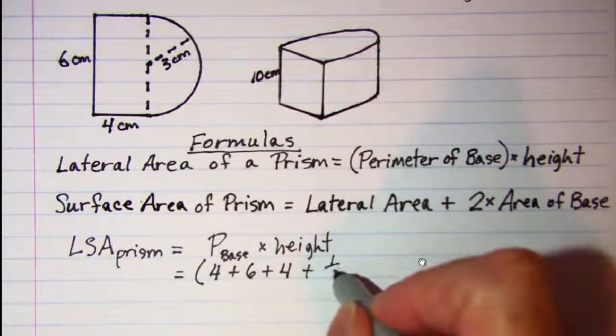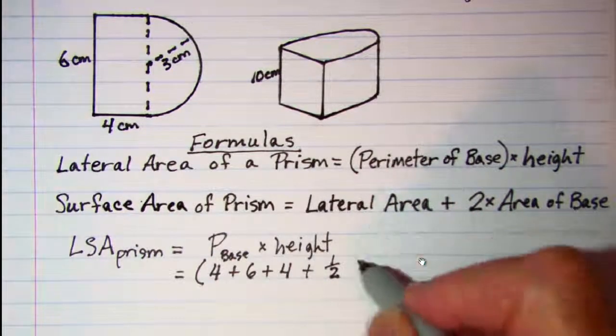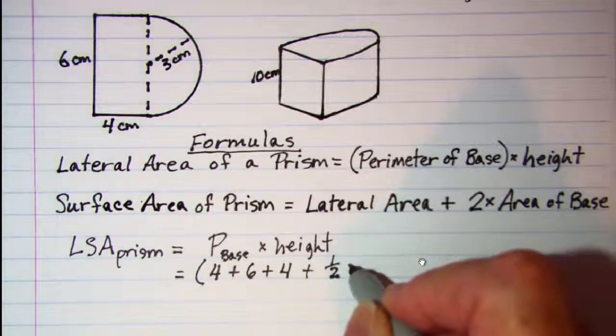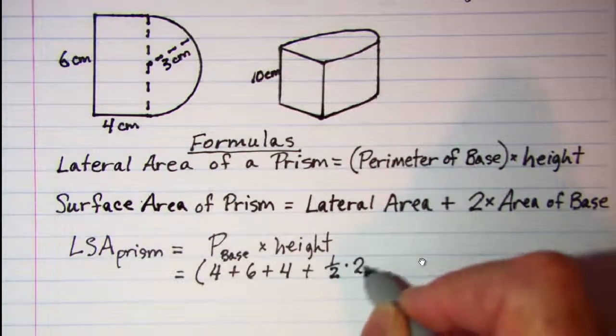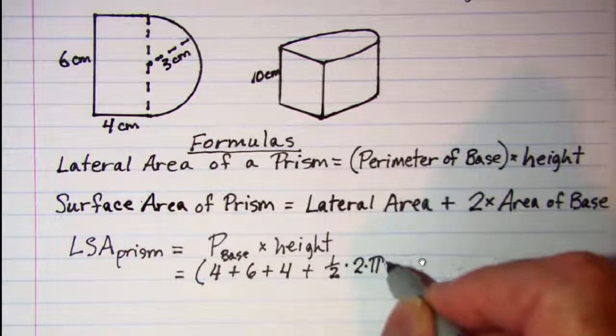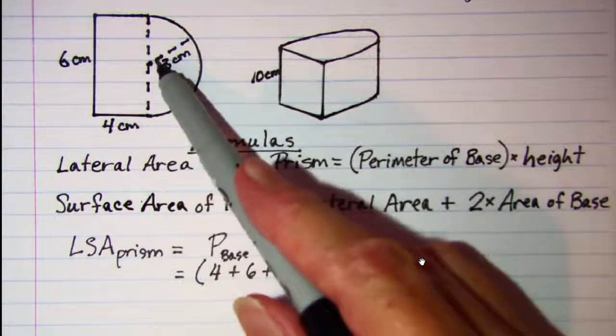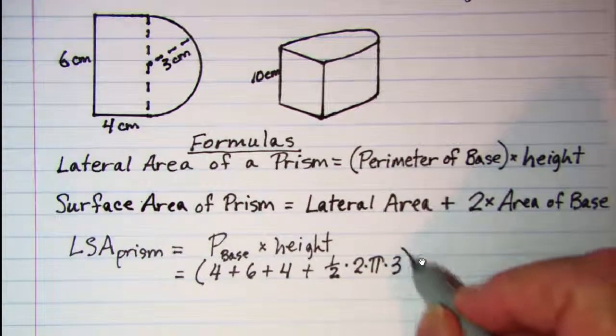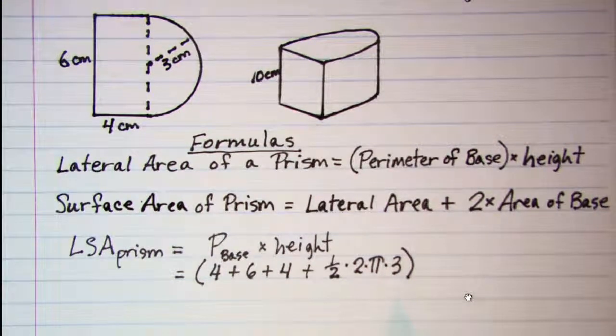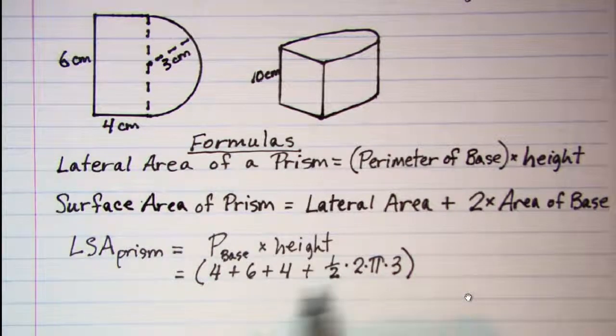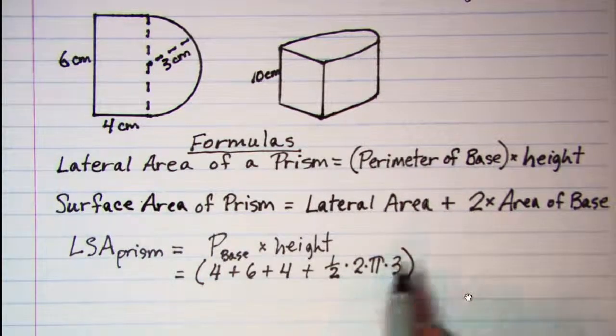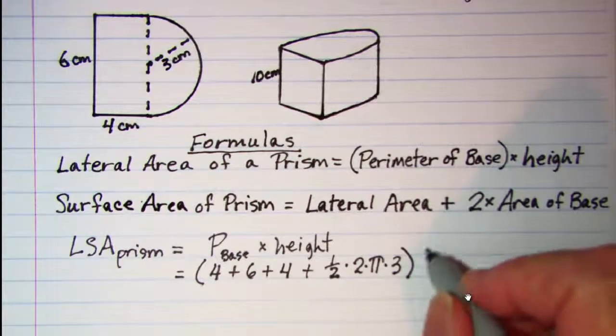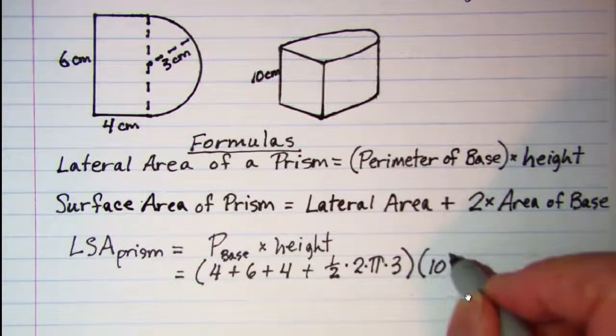So we need half of the circumference of a circle with a radius of three centimeters. So half and then circumference of a circle is 2πr, so 2 times π times the radius which is 3 cm. This is the perimeter of the base and then I am going to multiply that by the height which is 10 cm.